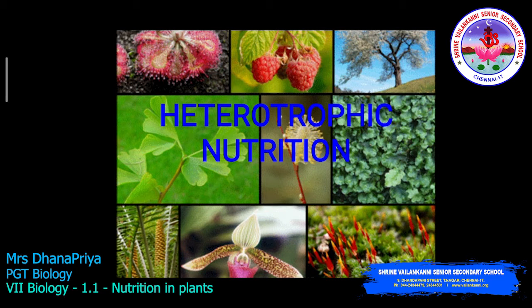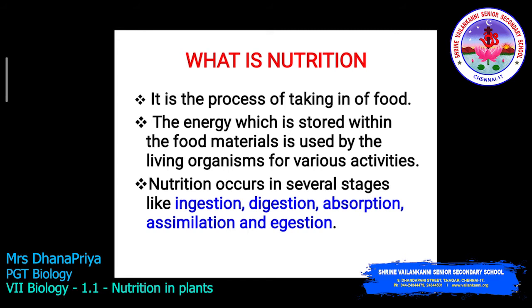Today we are going to proceed to a new topic: heterotrophic nutrition. The term 'hetero' means different. These types of organisms depend upon other organisms for food because there is no process of photosynthesis in these plants. Nutrition is the process of taking in food, and the energy stored within the food material is used by living organisms for various activities. Nutrition occurs in several stages like ingestion, digestion, absorption, and assimilation.